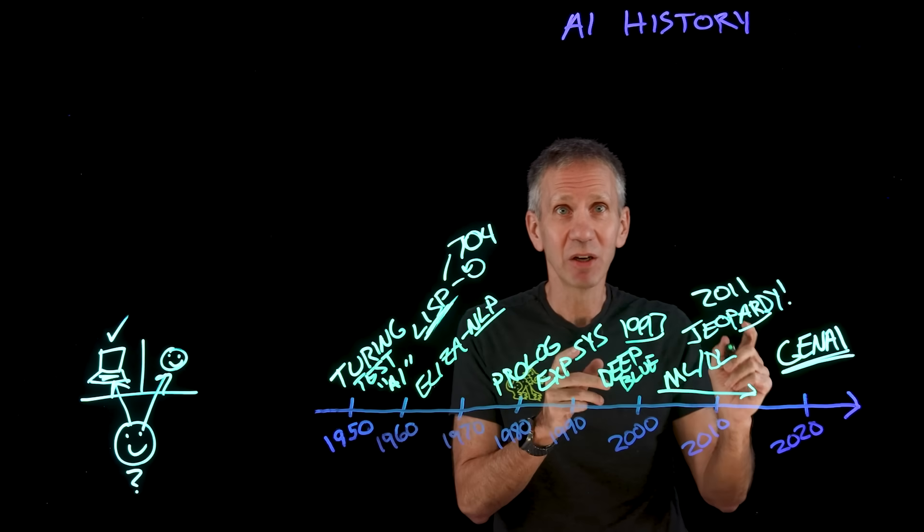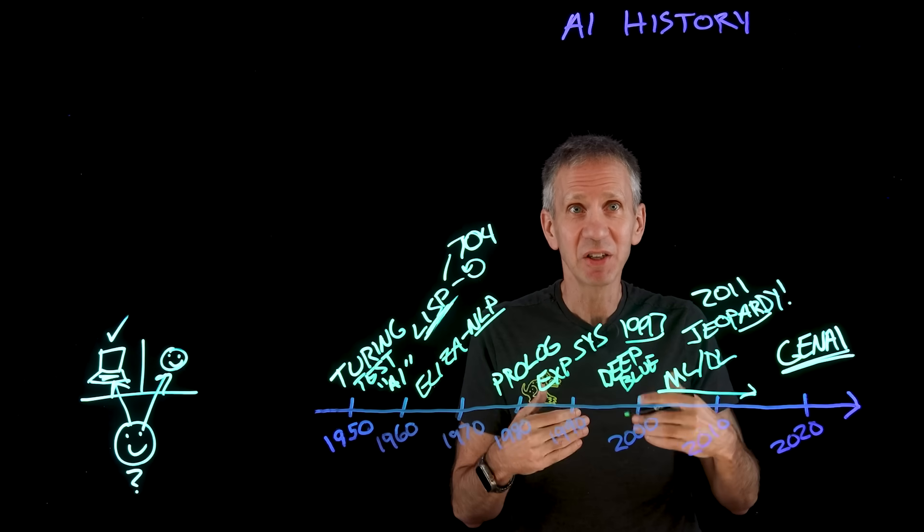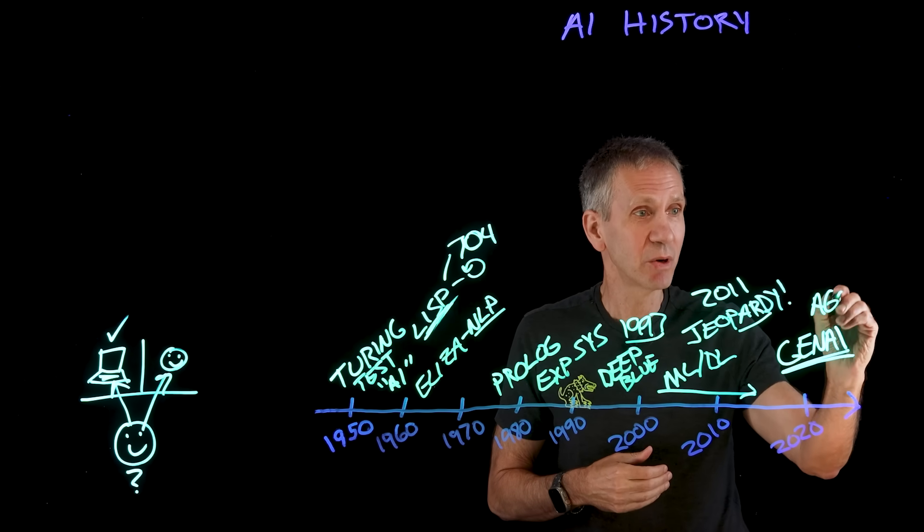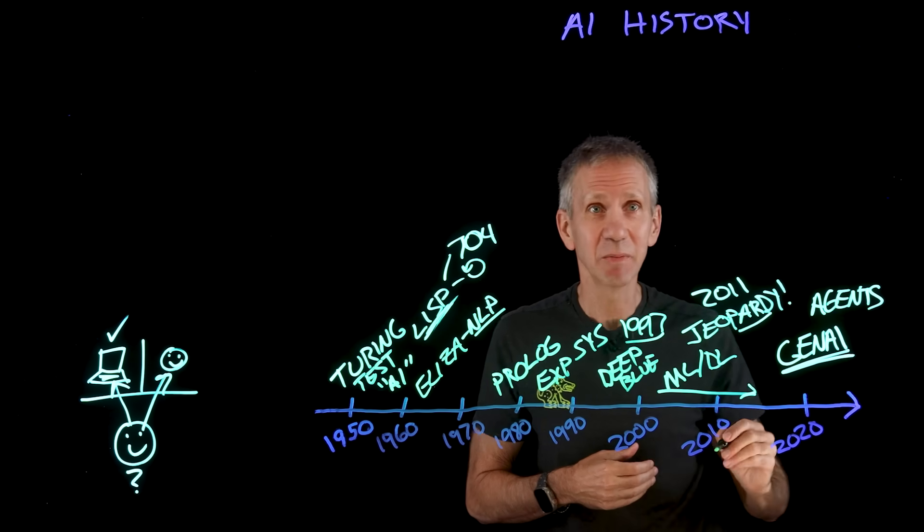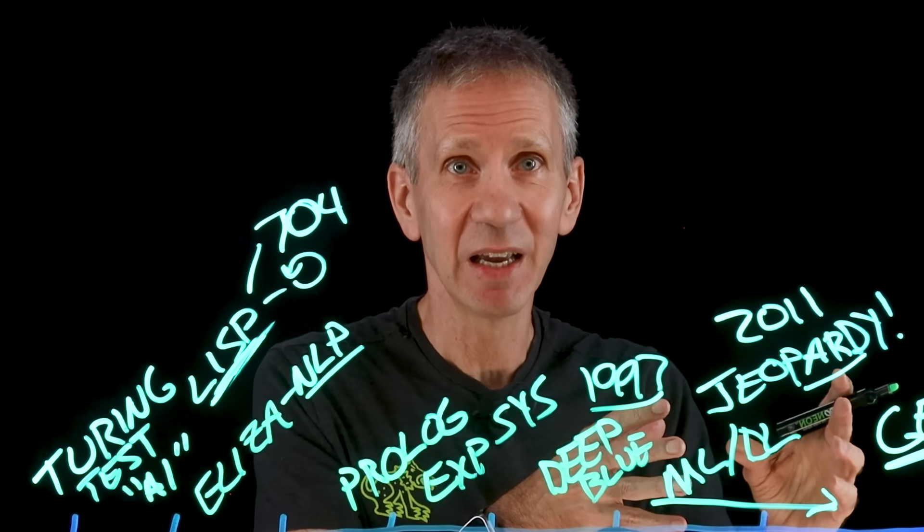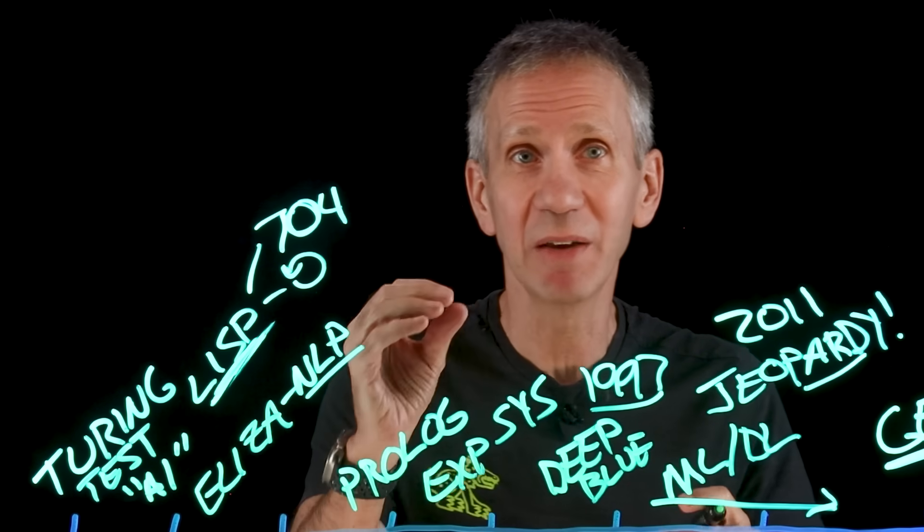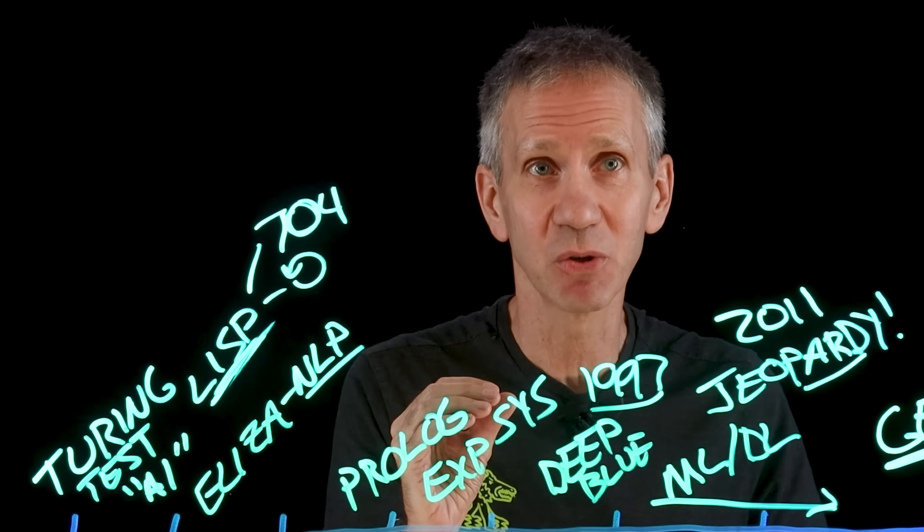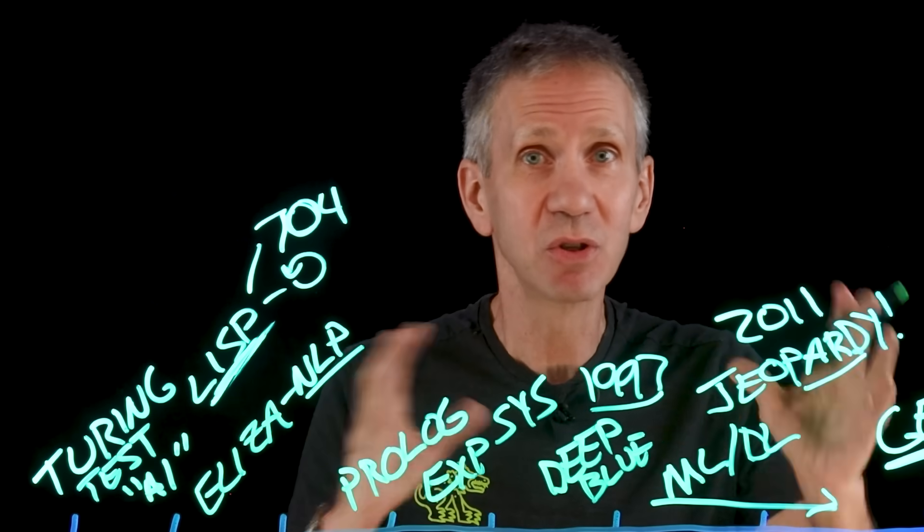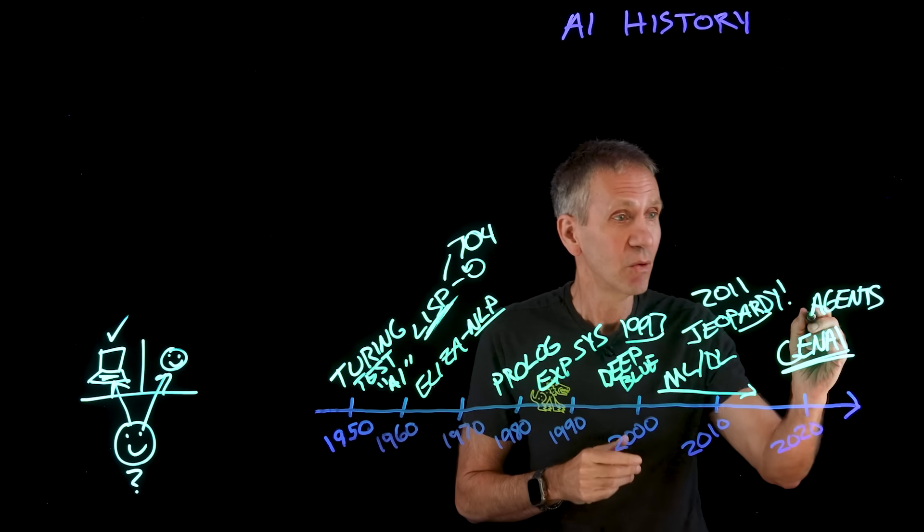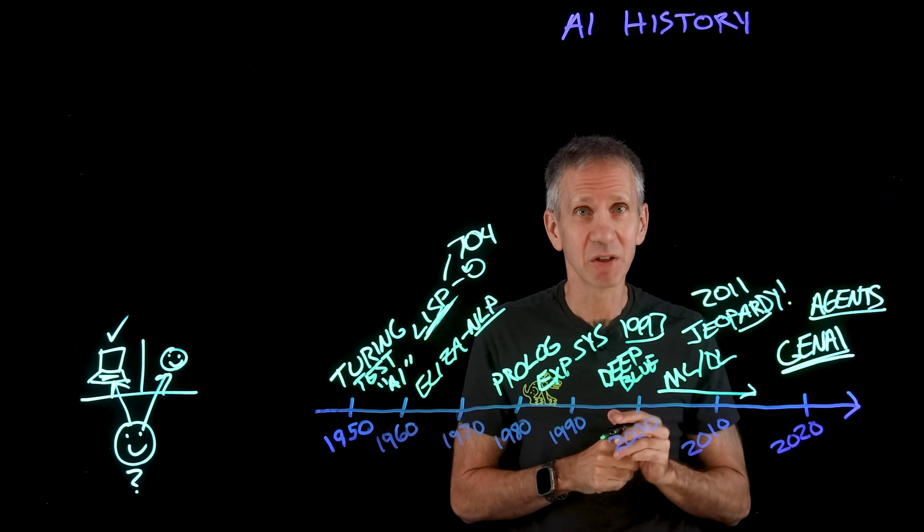And then where are we going with this? Well, we're already seeing 2025, I think, has been the year of the agents. This is when we start seeing agentic AI coming in, where we're taking an AI and giving it more autonomy, where it's able to operate on its own. We give it certain goals and things that it's supposed to accomplish. And then it uses different services in order to accomplish those things for us. So we're going to see a lot more of this happening as well.